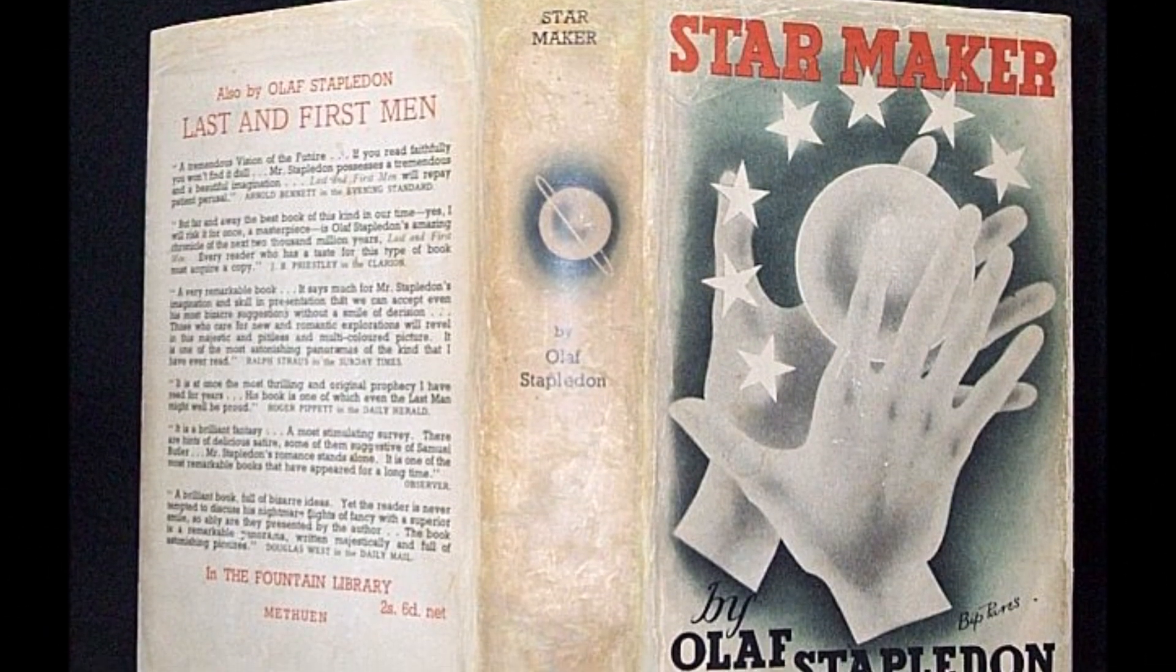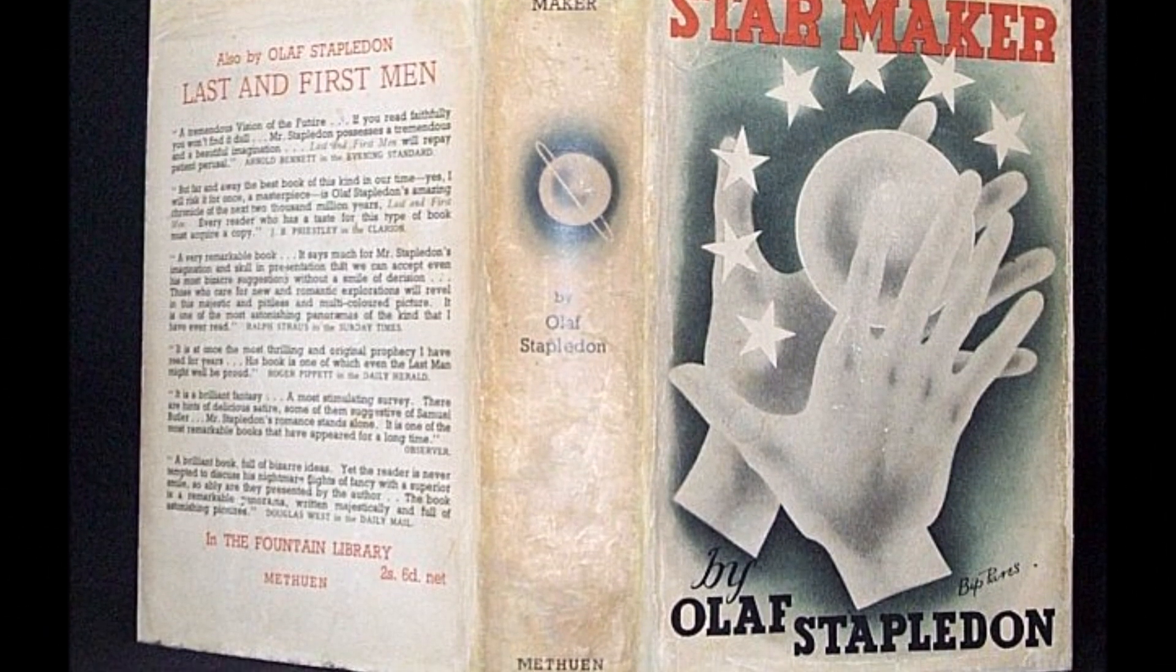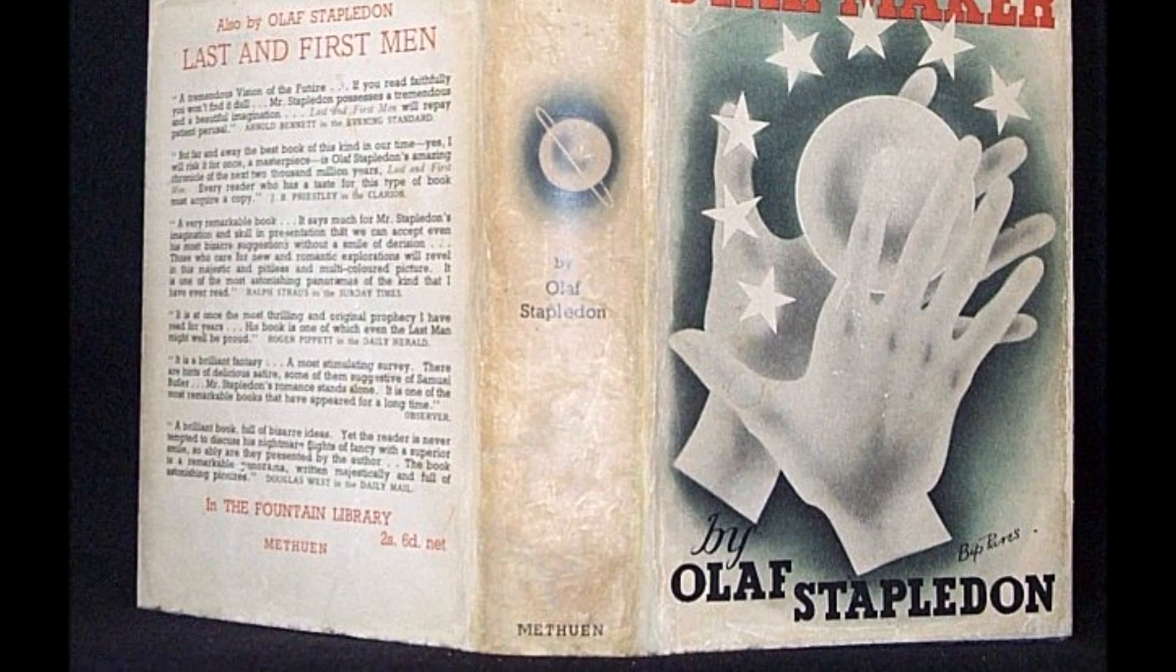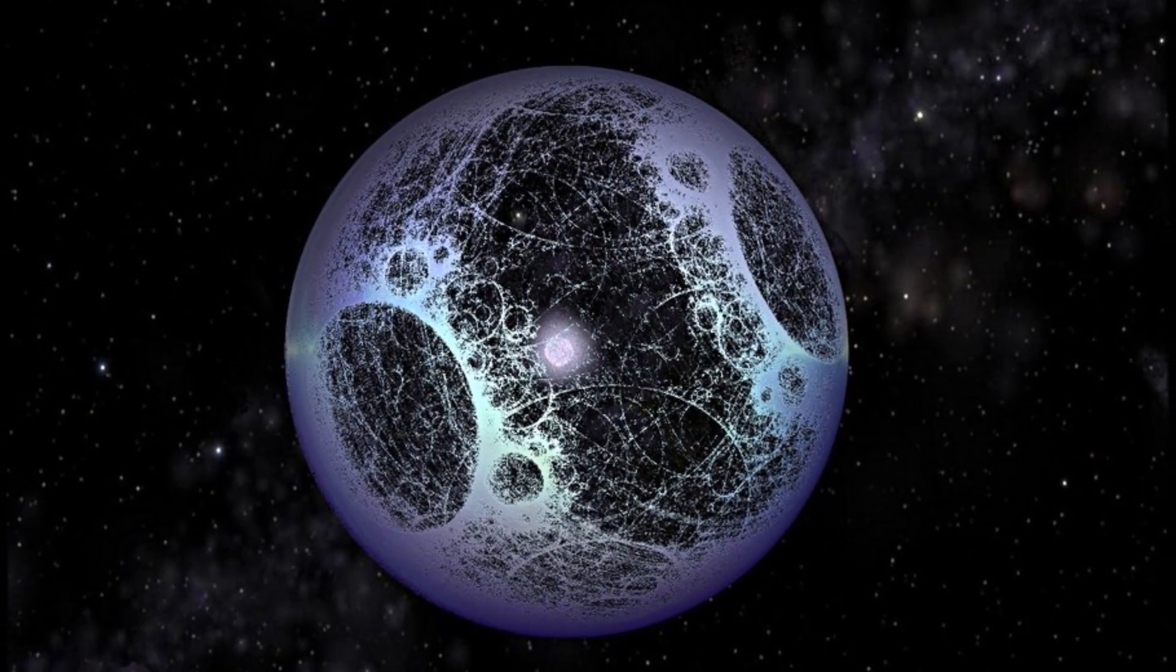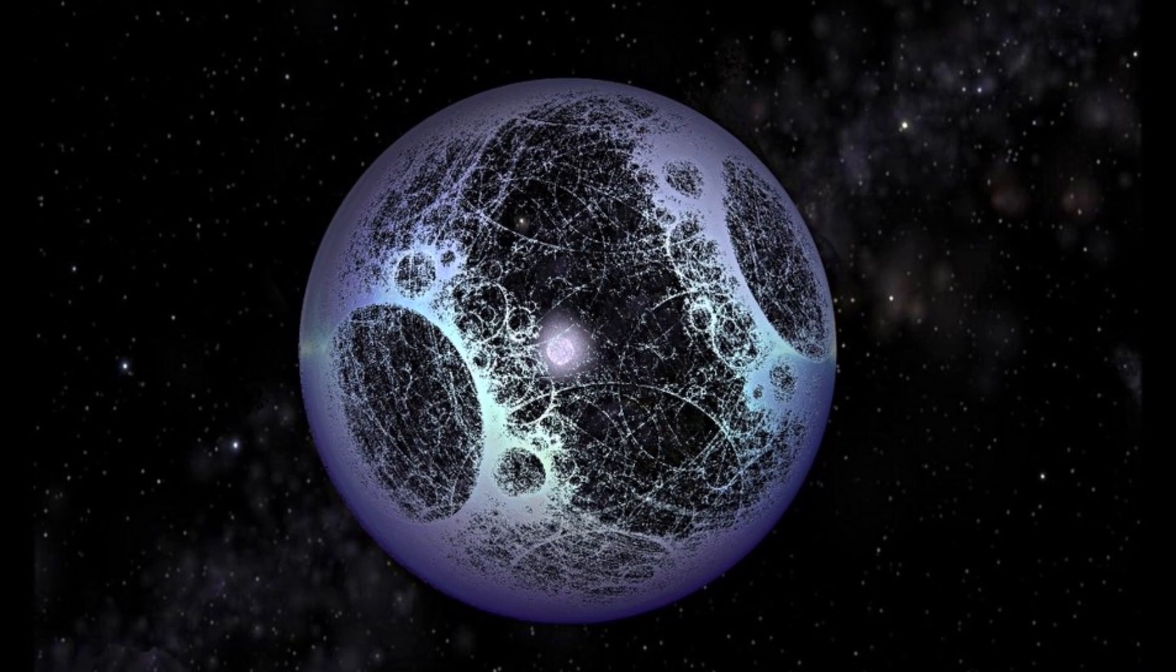First proposed in the 1937 sci-fi book Star Maker, Olaf Stapledon detailed a diagram where a large planetary orbit-wide sphere encompasses a star and its surrounding life-supporting planets. This idea then formed the basis for Freeman Dyson 30 years later in his paper, The Search for Artificial Stellar Sources of Infrared Radiation. In this paper, he detailed what has come to be known as a Dyson Structure, a means of capturing the true potential of a star.